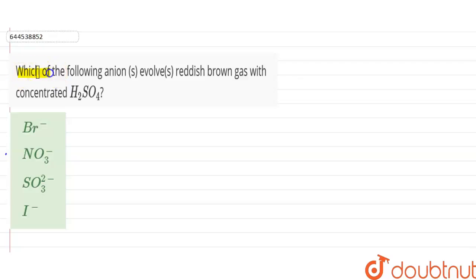Here question given is: which of the following anion evolves reddish brown gas with concentrated sulfuric acid?